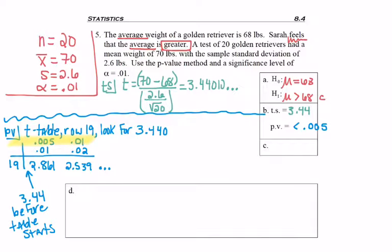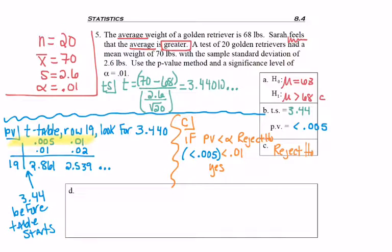And now I'm ready to decide whether I reject or fail to reject. The rule is, if the p-value is less than alpha, the significance level, reject H-naught. So even though I don't have an exact p-value, I've got a range, something less than 0.005, is that less than my significance level of 0.01? Yes, 0.05 would have been less, and my number is even smaller than that. This means that I reject H-naught.